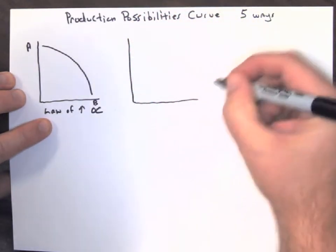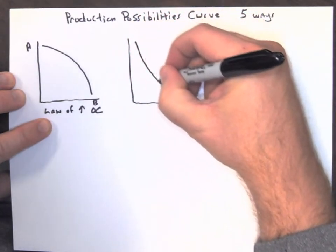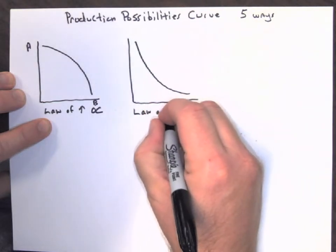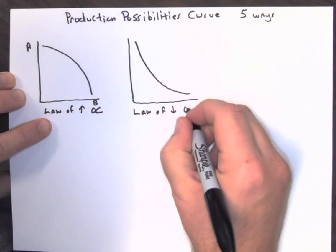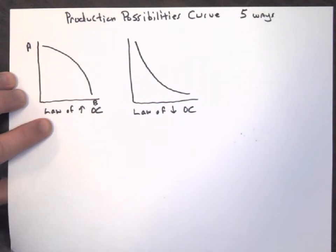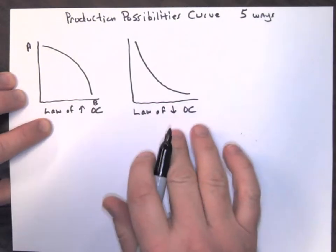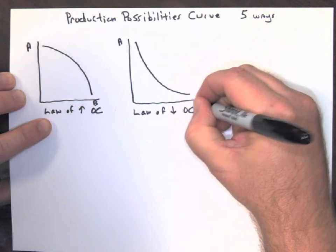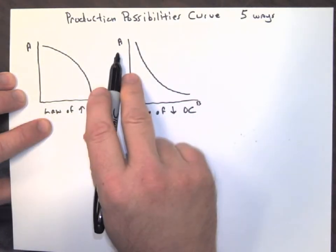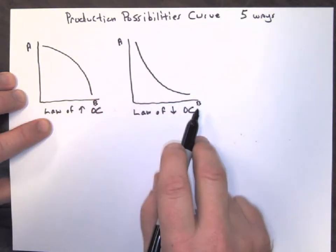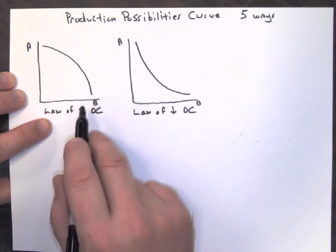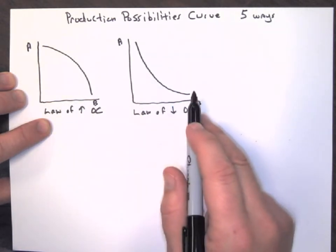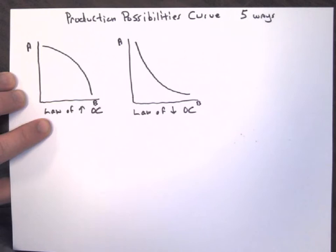The opposite could exist — the curve could bow inward if we had the law of decreasing opportunity cost. This is not very realistic, but it is a possibility. What that says is every time we make one of item A, we get to make more and more of item B instead of less and less. So that's going to make the curve bow inward — that's the law of decreasing opportunity cost.